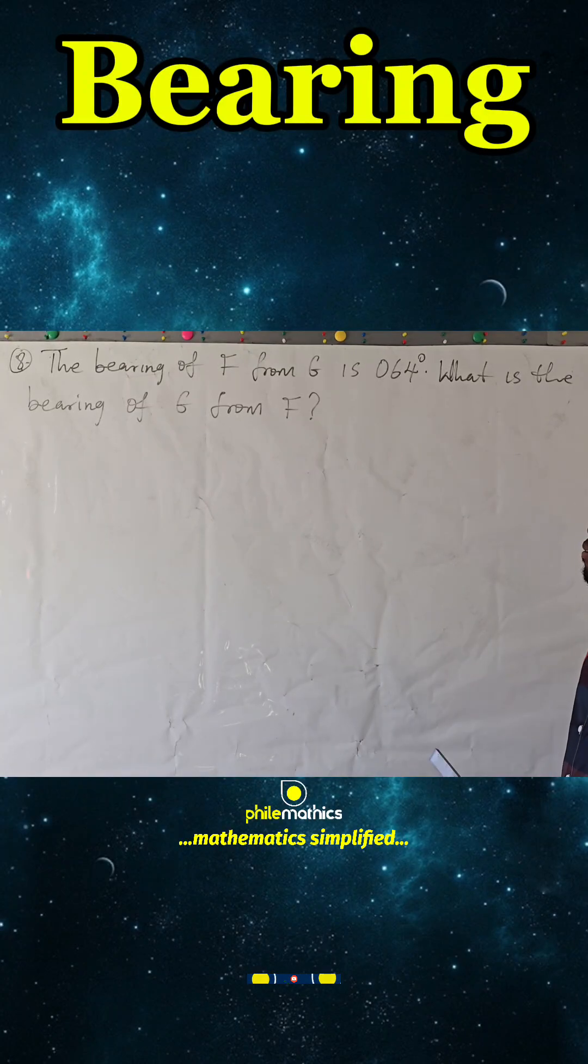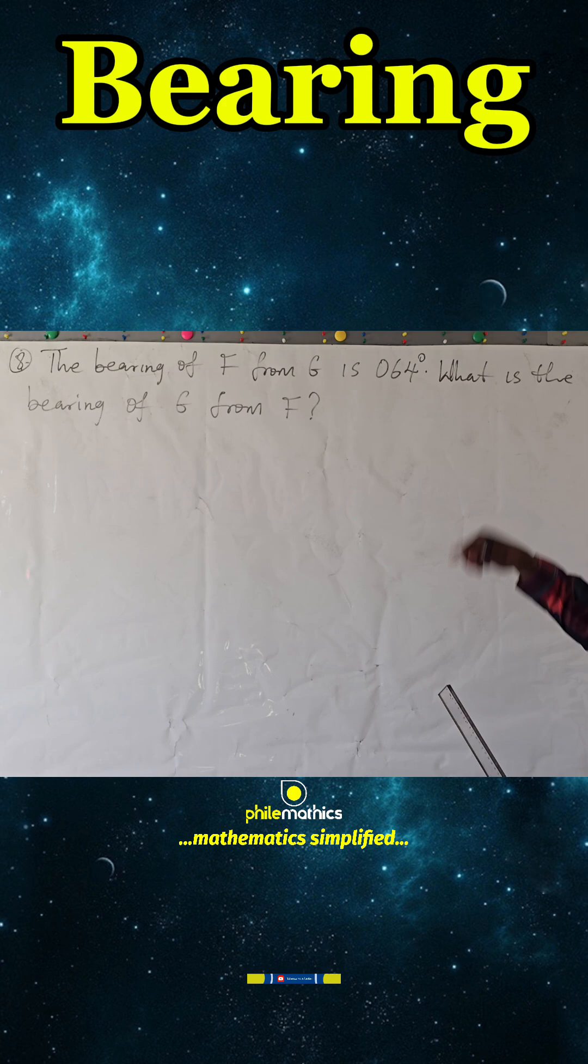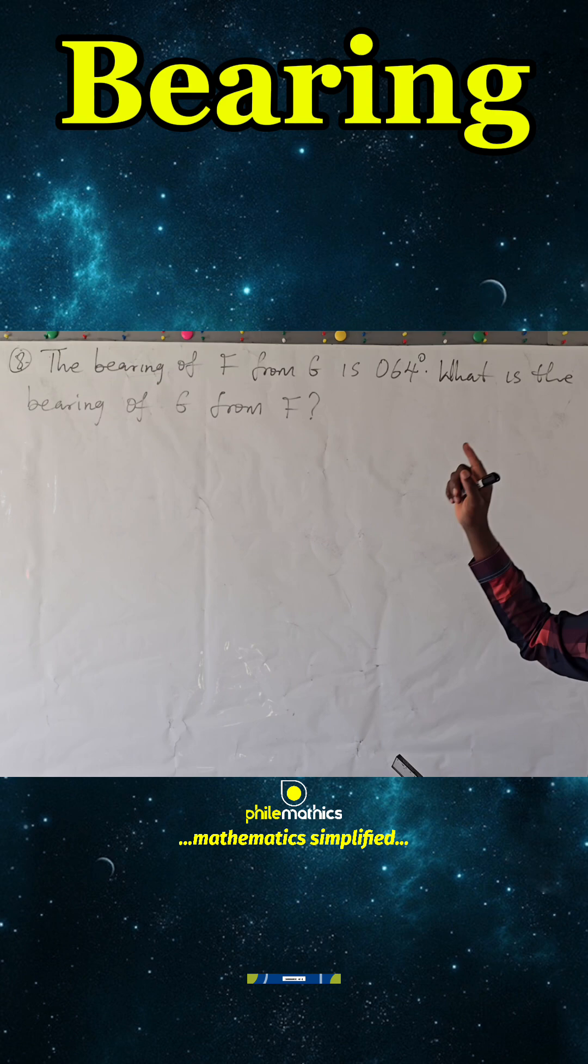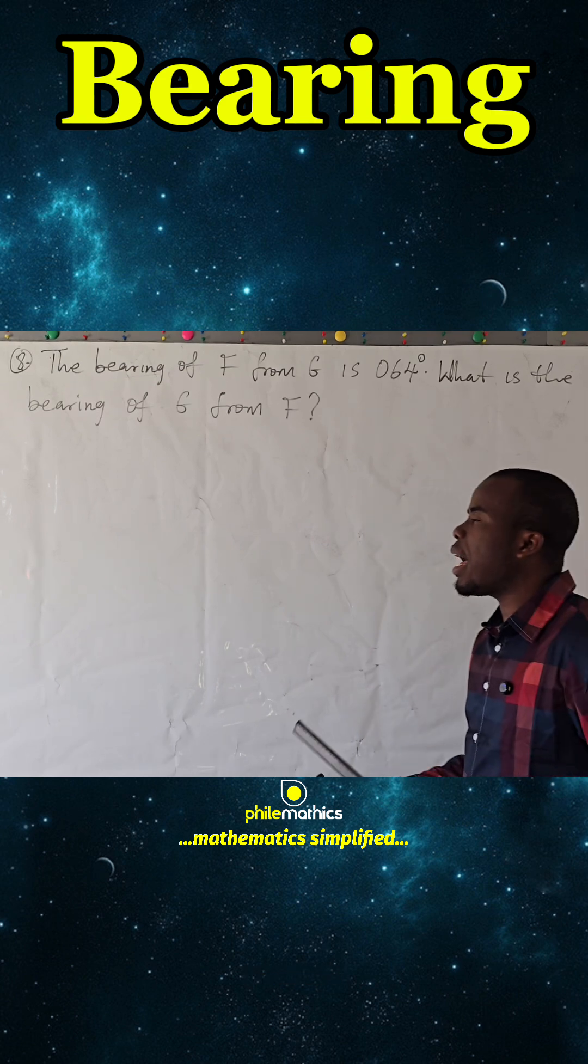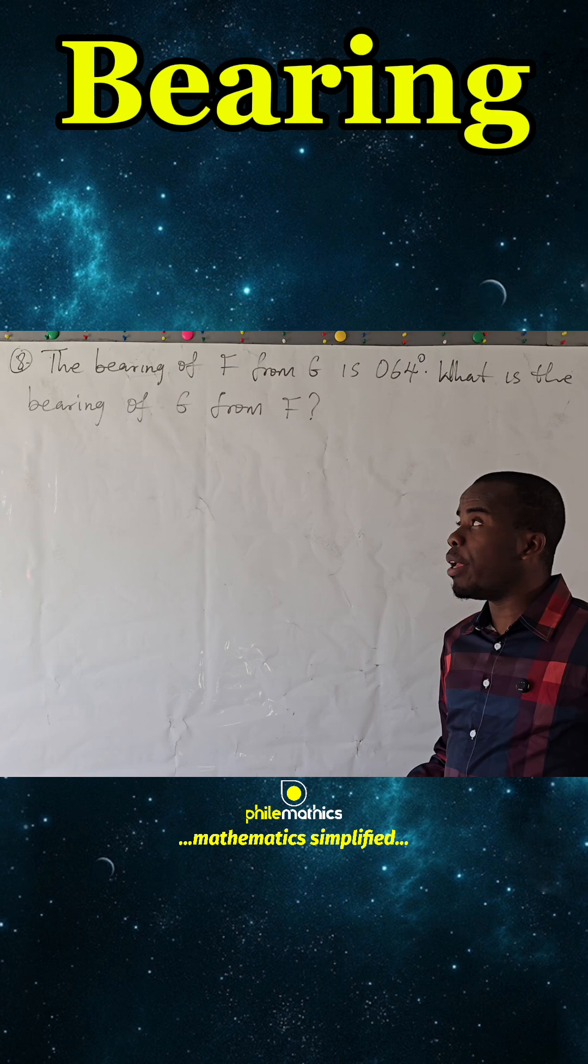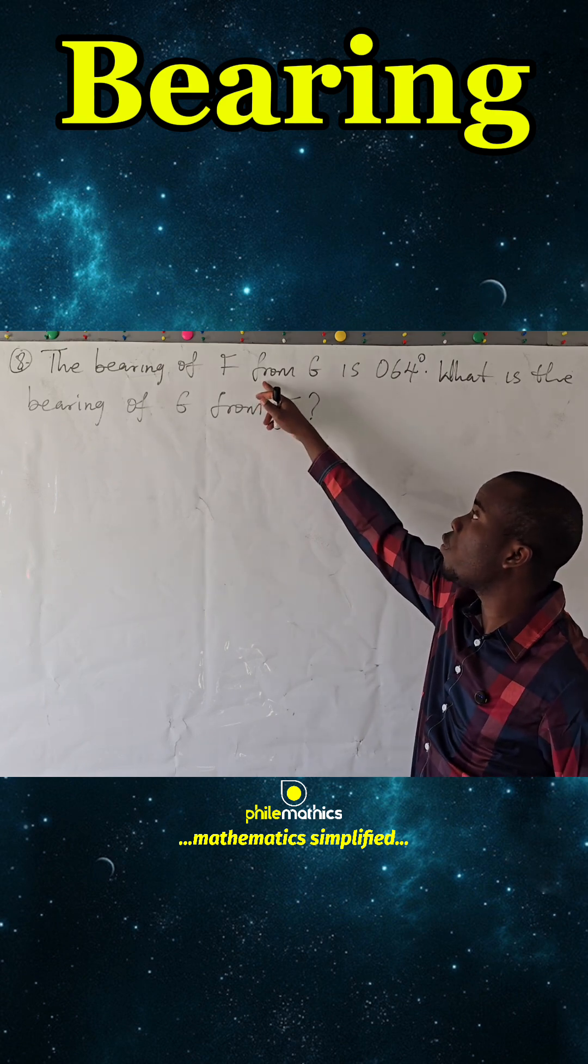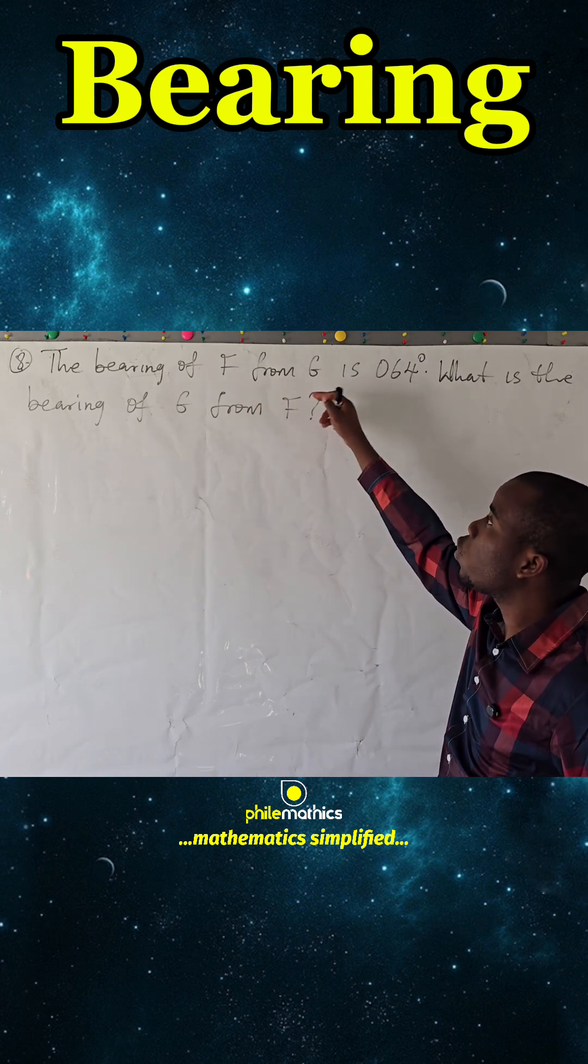The bearing of F from G is 064 degrees, this will call three-digit bearing. What is the bearing of G from F? One of the keys in answering bearing problems is using this word 'from', so you want to start your bearing construction on this 'from'.